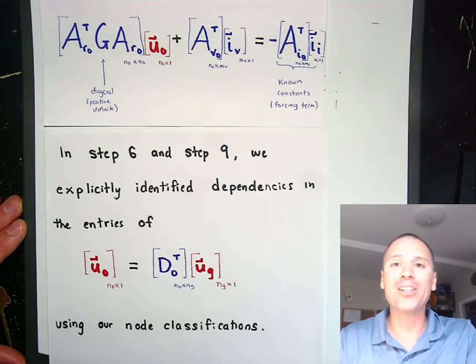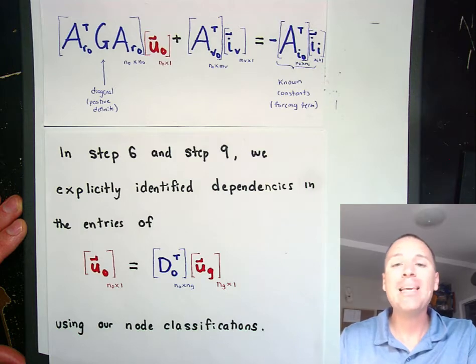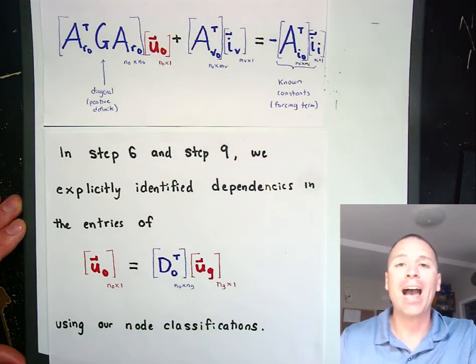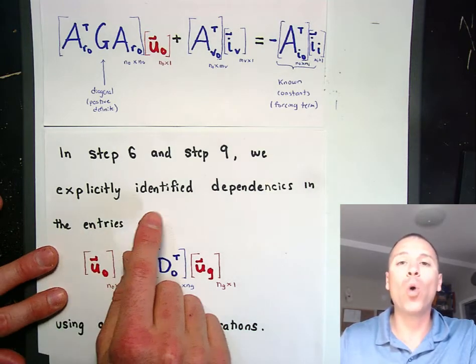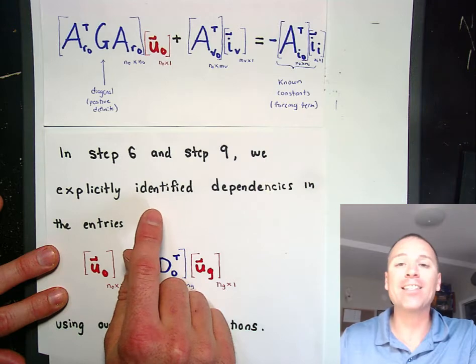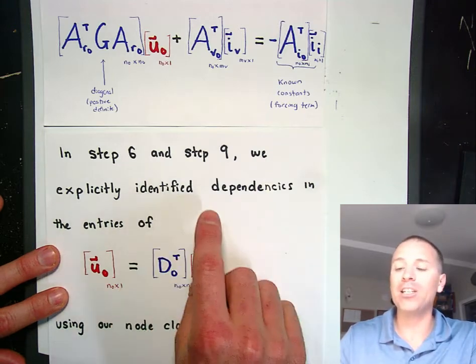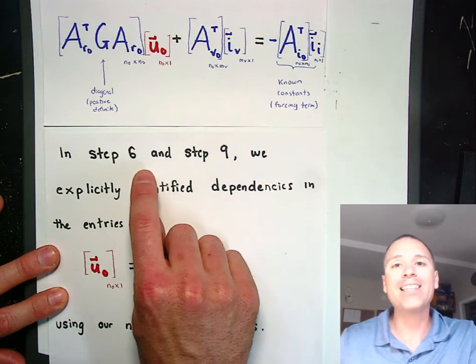We're going to get real precise about that in step 10 of the LANA algorithm. The major question is: given this system of equations, is there any way that we can simplify or eliminate redundant or dependent entries of the vector u sub 0 that would allow us to ignore or deal with this term involving the currents running through the voltage sources? The answer to that question is a resounding yes.